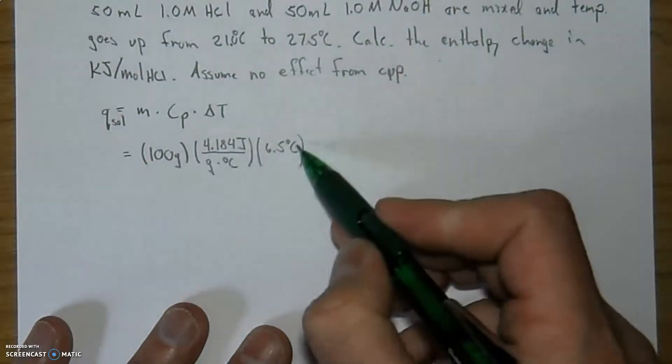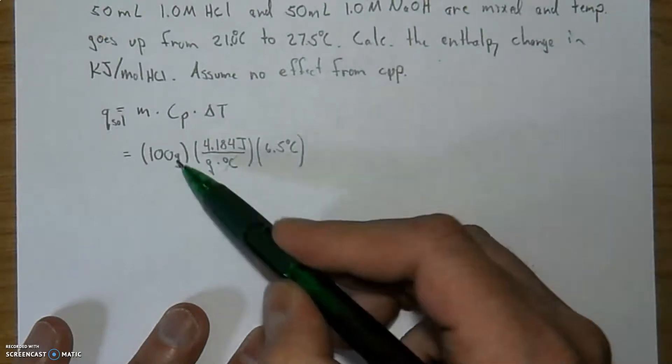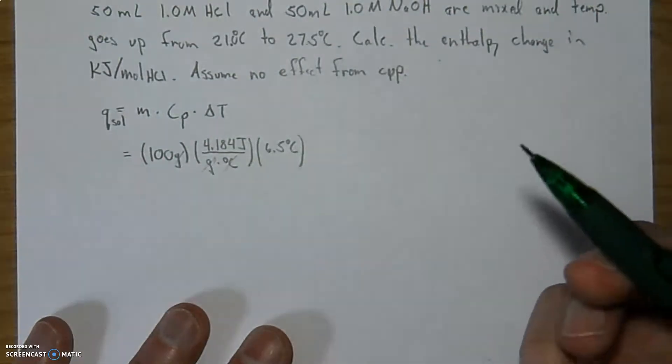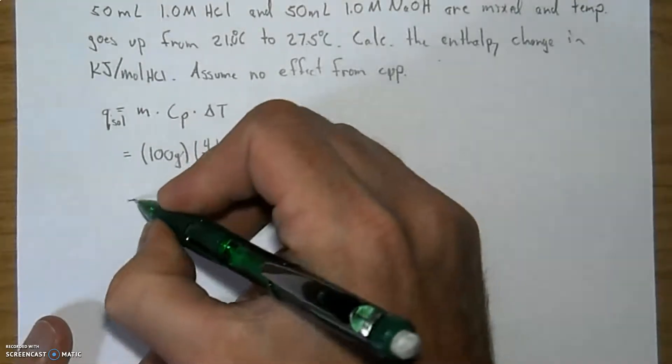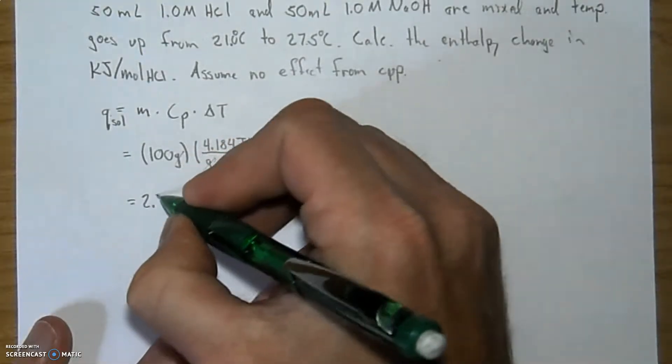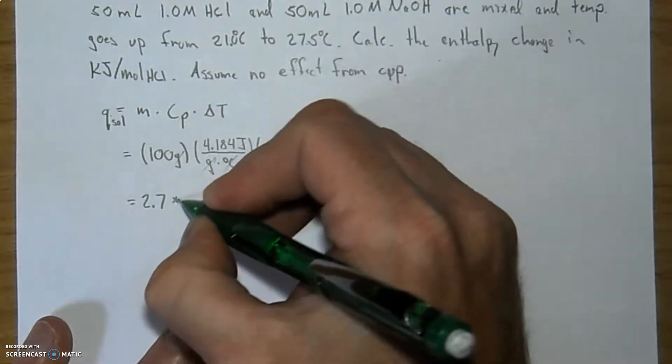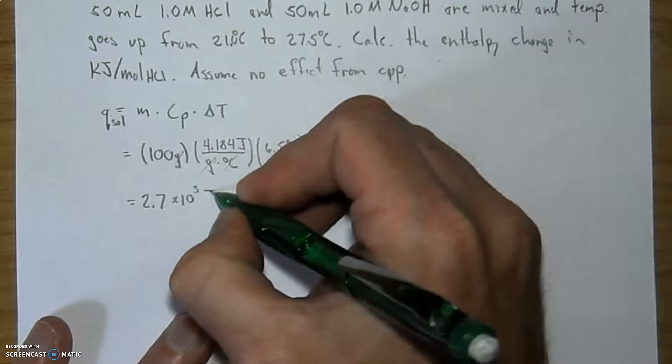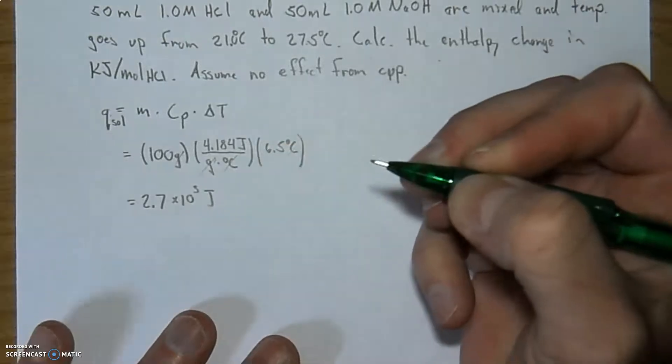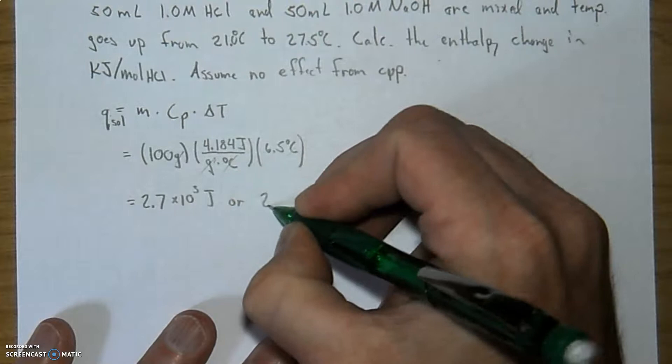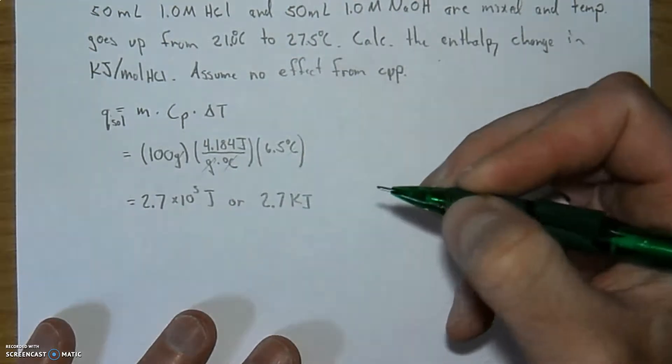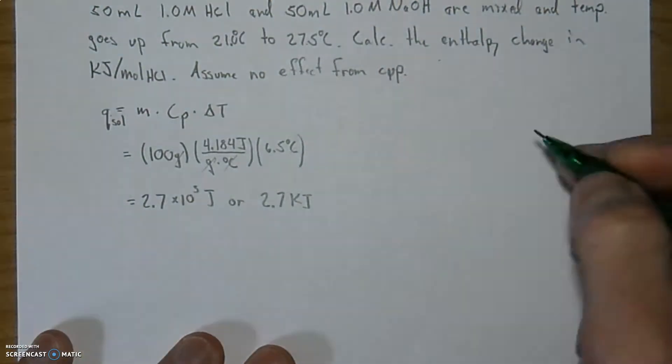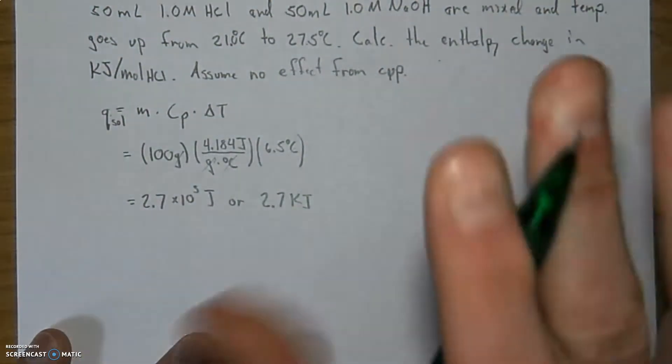Now, if we look at the units, the Celsius and the Celsius will cancel. The grams and the grams will cancel. And the only thing remaining at the end will be joules, which is what energy is measured in. Doing the math here, we will find in scientific notation 2.7 times 10 to the third joules. So 2.7 kilojoules of energy is released by the reaction or absorbed by the water. So we'll come back to that in a second.